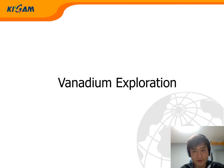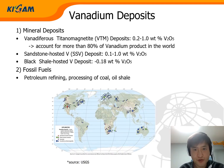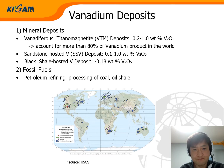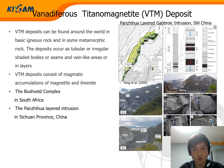Let's go to vanadium exploration. Vanadium is produced from several deposit types. Typical vanadium deposits are vanadiferous titanomagnetite (VTM) deposits, sandstone-hosted vanadium deposits, and black shale-hosted vanadium deposits. A small portion of vanadium also comes from phosphates. Among them, VTM accounts for more than 80% of vanadium production in the world. Fortunately, we have a VTM deposit in Korea.